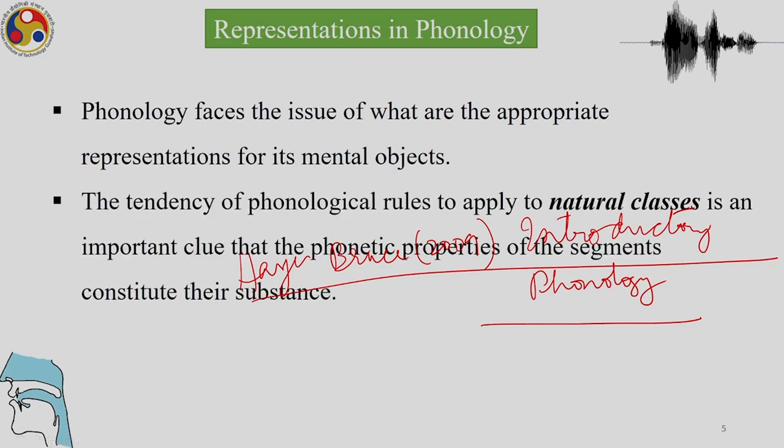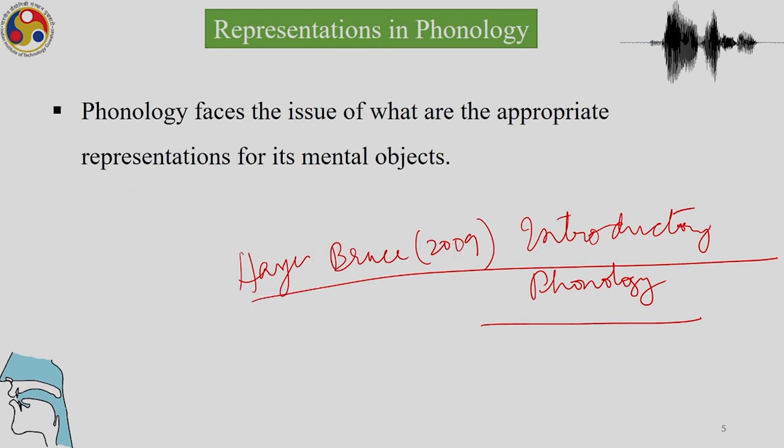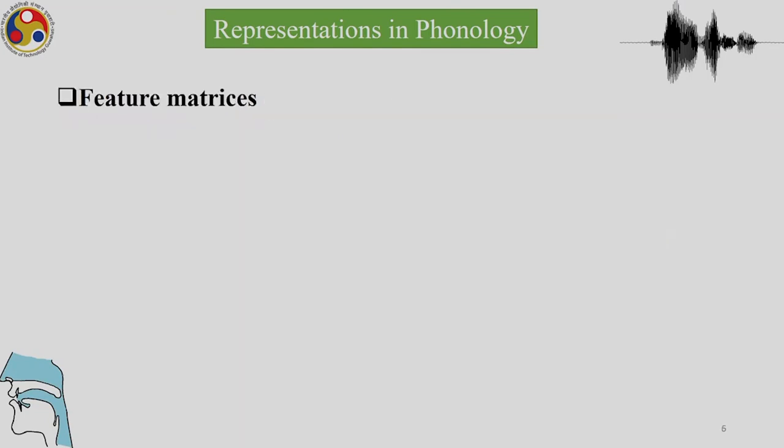The tendency of phonological rules to apply to natural classes is an important clue that phonetic properties of segments constitute their substance. Phonological rules apply to groups of sounds, and these groups are consistent across languages. The idea of natural classes springs from this. Feature matrices — initially conceptualized by Jakobson and Halle — represent each segment as a bundle of features which collectively define it, and the usual formal notation for this is still the feature matrix.